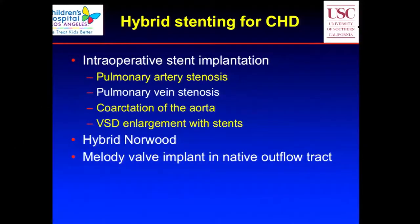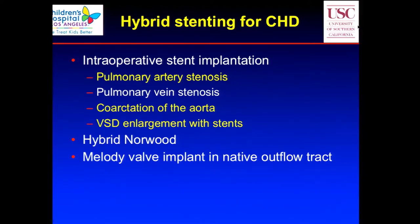Let me start by talking about some of the kinds of lesions for which we perform intraoperative stents. You heard a nice lecture on stenting the ductus in hypoplastic left heart, so I won't talk much about that. I'm going to focus mostly on what's highlighted in yellow: pulmonary artery stenosis. I'll leave pulmonary vein stenosis alone, talk a little about coarctation, and an unusual situation with double outlets where a large VSD becomes restrictive and we enlarge the VSD using stents. I'll leave the melody valve alone for now.